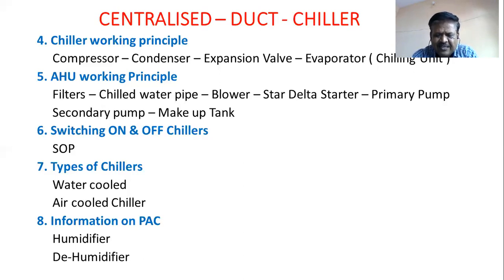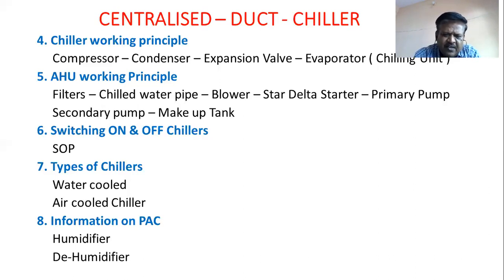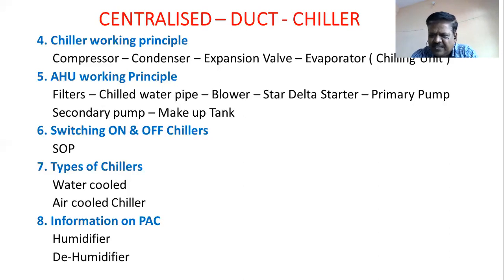For the switching off process: first switch off the chiller, then let the primary and secondary pumps run for half an hour — because the chilled water which is below 9 degrees centigrade will continue to circulate and maintain the cooling effect for 30 to 45 minutes. After completing all your daily work, updating all the records, then switch off the primary and secondary pump and then switch off the system.